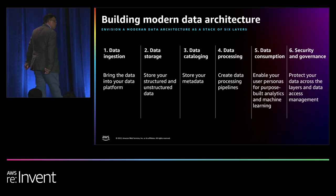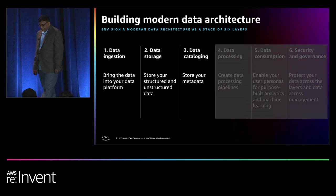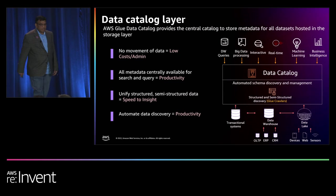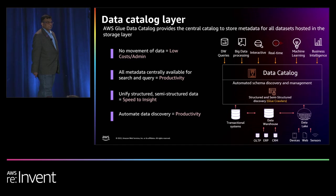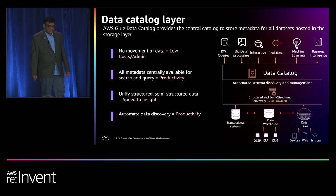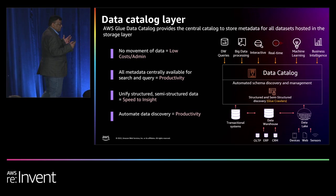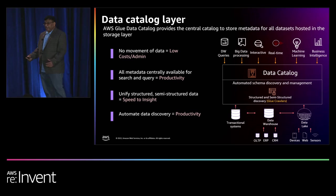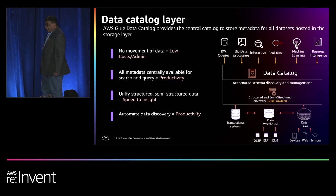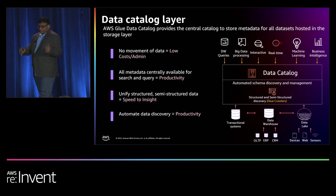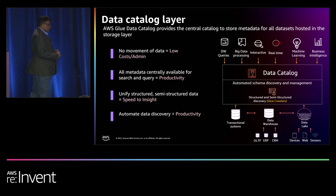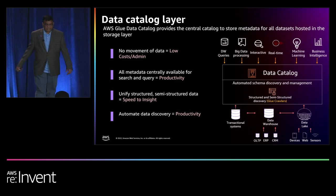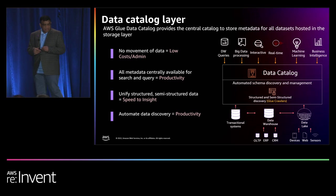Now let us zoom into the data cataloging layer. When you are building a modern data architecture on AWS, you will start ingesting hundreds to thousands of data sets from a wide variety of data sources, so a central data catalog is needed. You can use AWS Glue Data Catalog for your central data catalog. AWS Glue Crawler can scan your data and then create a central data catalog for your data sets. AWS Glue Data Catalog integrates with many AWS services like Amazon Redshift Spectrum, Amazon EMR, Amazon Athena, Amazon Kinesis Data Streams, and Amazon MSK.